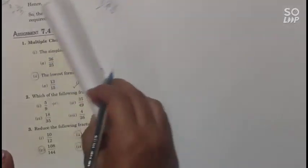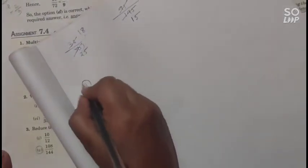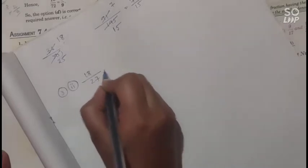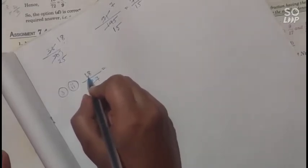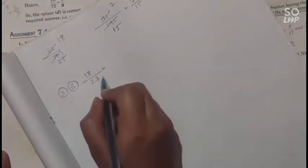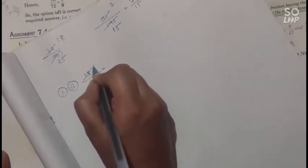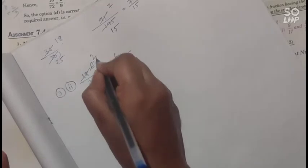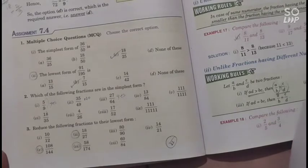Question number 3: 18 upon 27. You have to convert this to lowest form. The common factor of 18 is 3 and the factor of 27 is also 3. Cancelling by 3: 3 sixes are 18, 3 nines are 27, giving 6 upon 9. Then dividing again by 3: 3 twos are 6, 3 threes are 9, so 2 upon 3 is the lowest form.